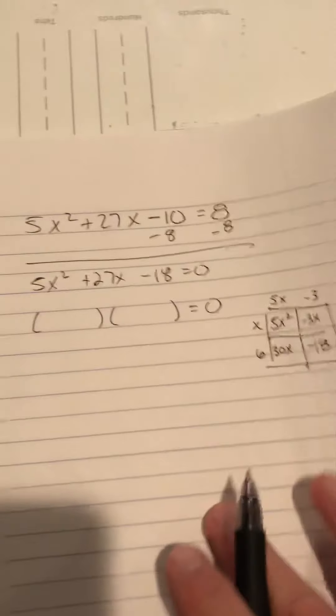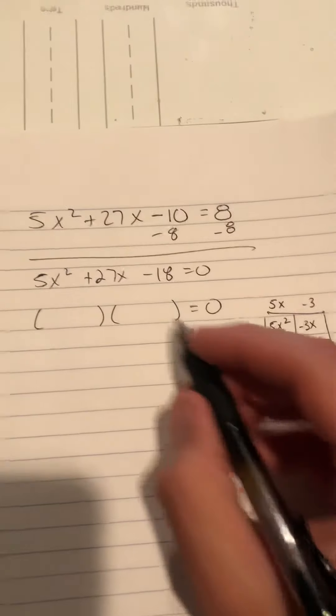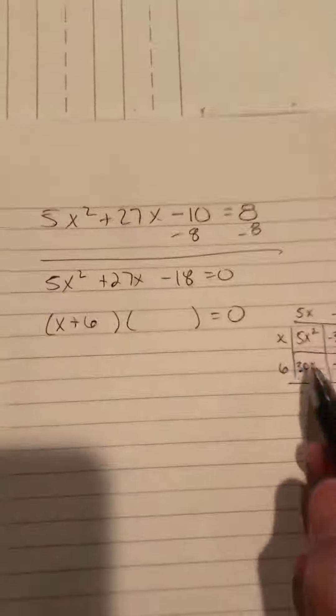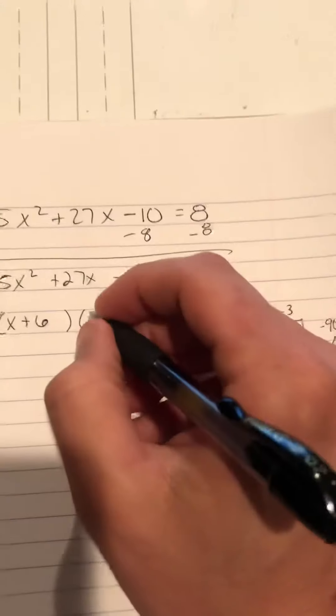Next, I'll take those two terms, x plus 6, and put them in one of the quantities, and the other two terms, 5x minus 3, in the other quantity.